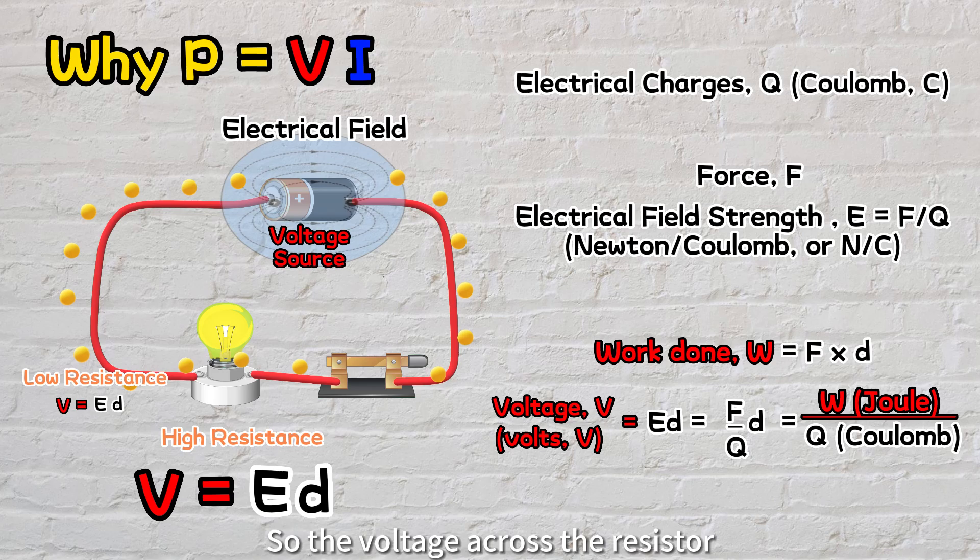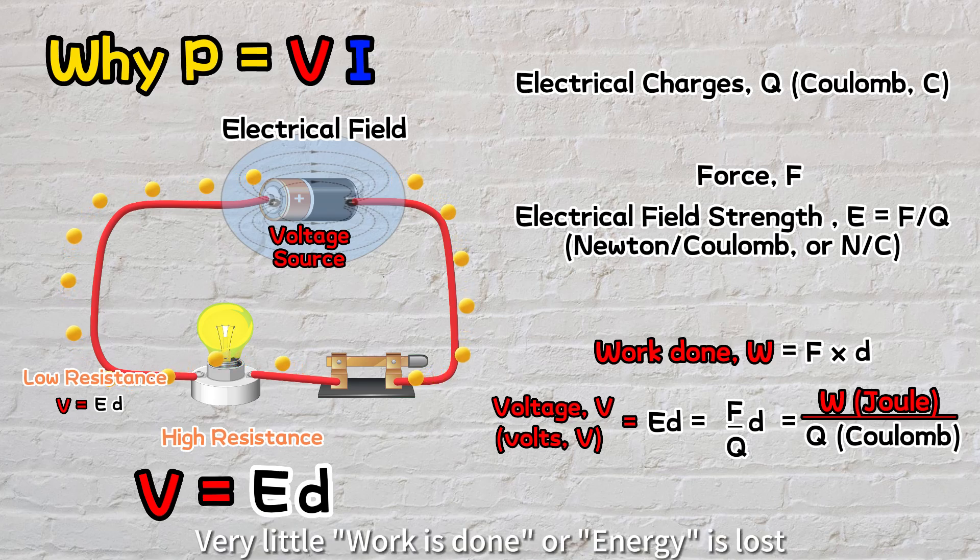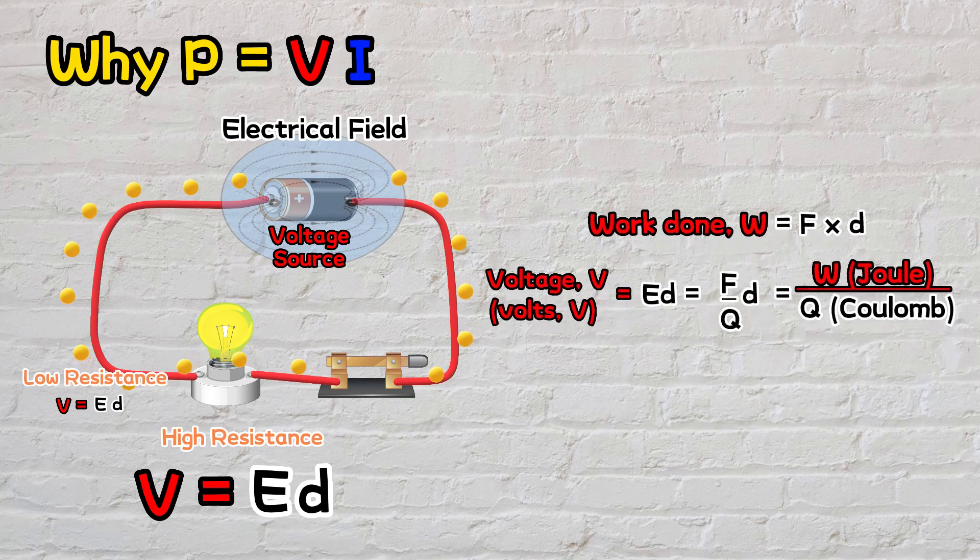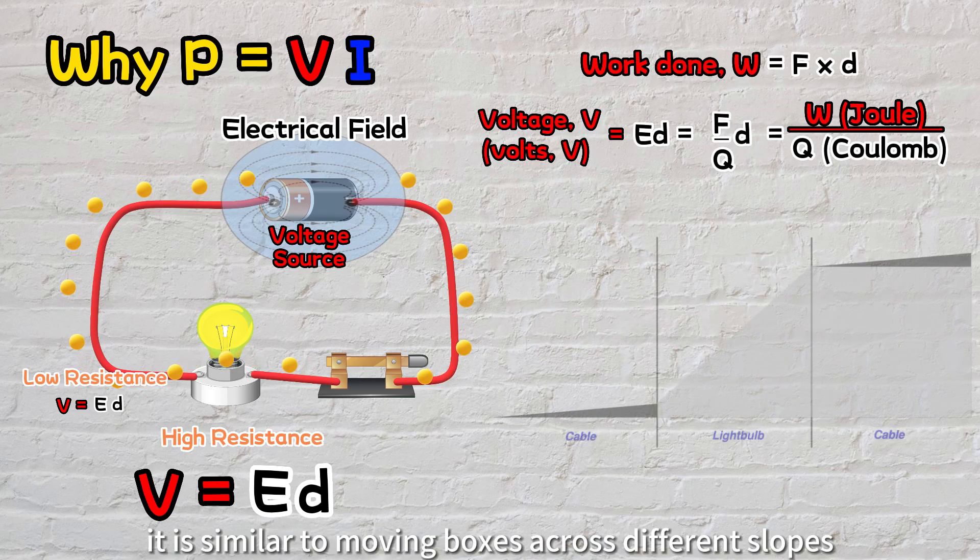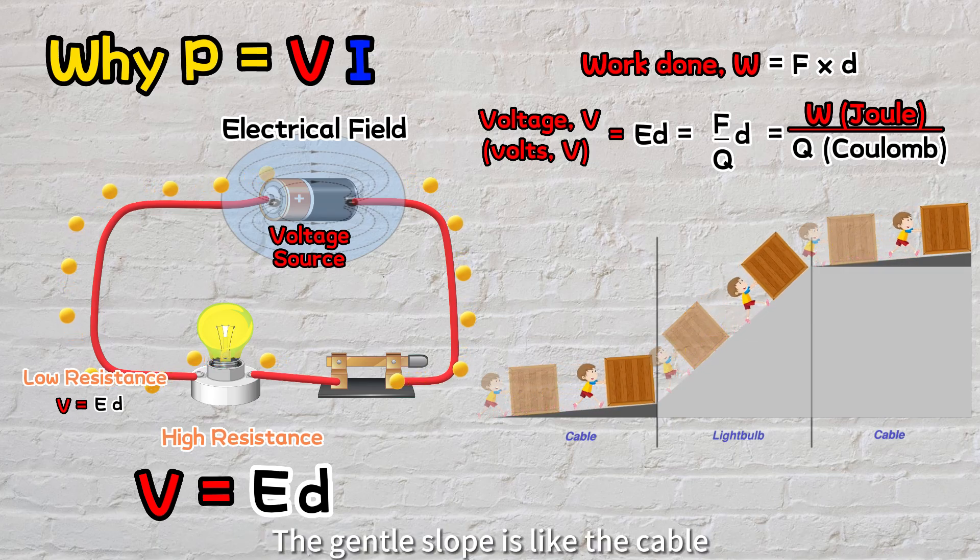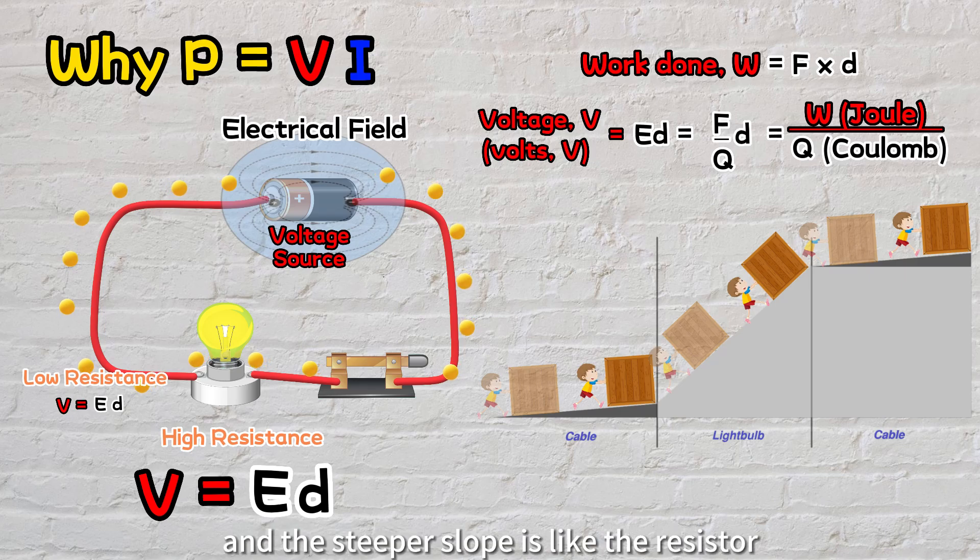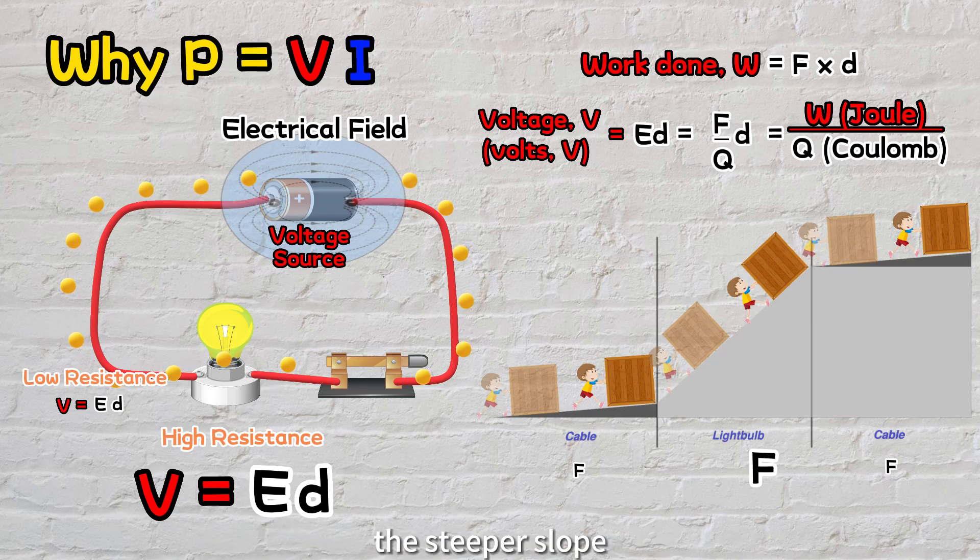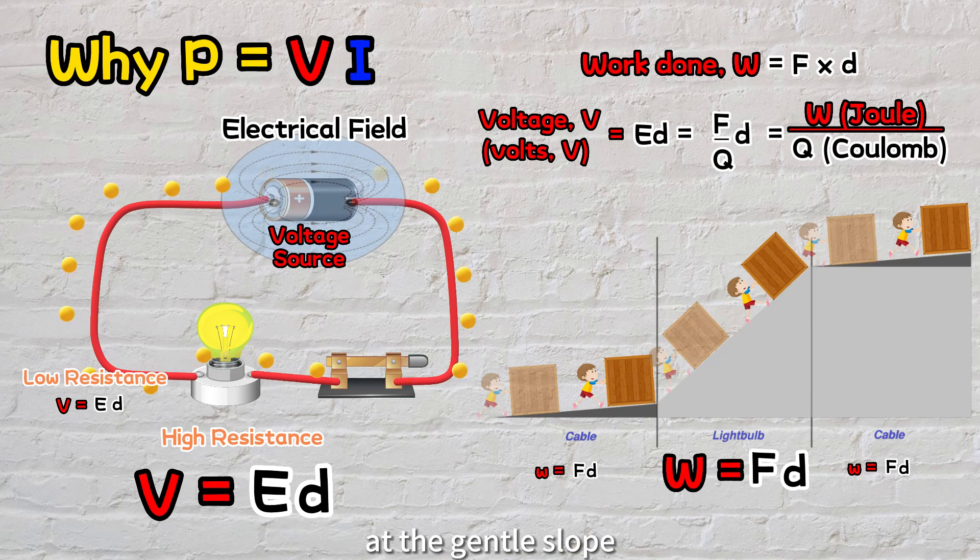So the voltage across the resistor is higher than the voltage across the cables. Very little work is done or energy is lost as heat in the cable because the charges don't bump into the atoms there as much compared to the light bulb. For easier understanding, it's similar to moving boxes across different slopes. The gentle slope is like the cable and the steeper slope is like the resistor. Stronger force is needed to push the box up the steeper slope and the work done is higher. On the other hand, at the gentle slope, less force is required and the work done is lower.